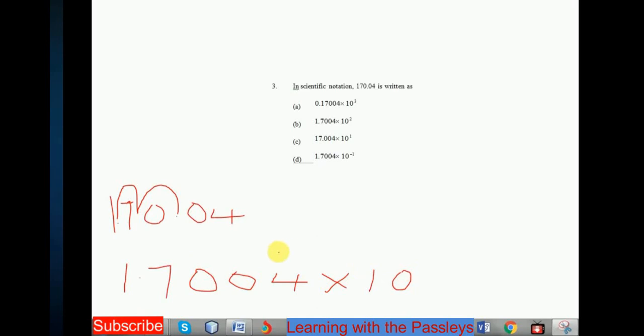Since we move the decimal point two places on the left, our answer, the power should be 2, positive 2. Hence, our answer is B. This is how we write a number in standard form.